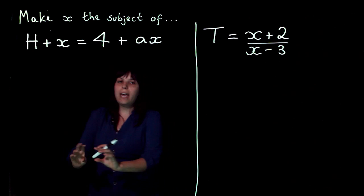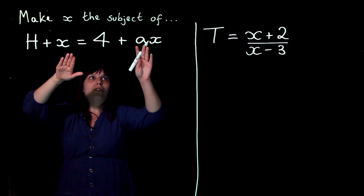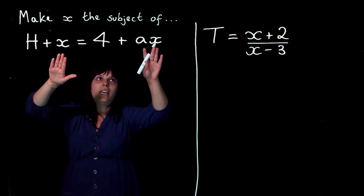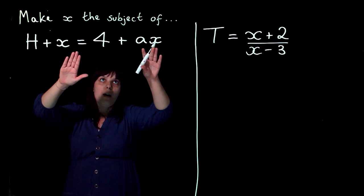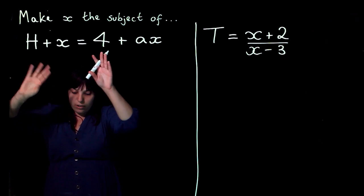So at the end, I want to get x on its own. The first thing I need to do is I notice I've got two x's, so I'm going to try and get them on the same side. And while I'm getting them on the same side, I'm going to get everything else on the other side.